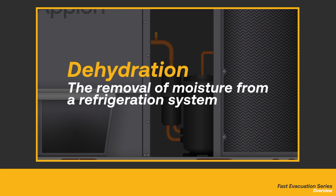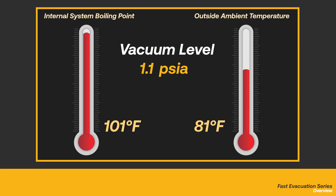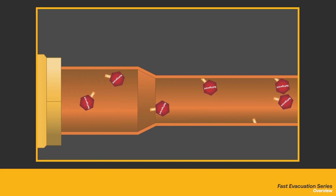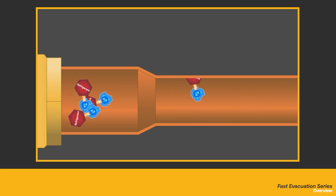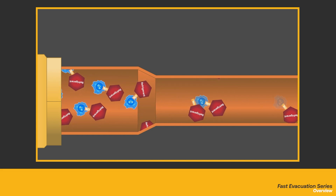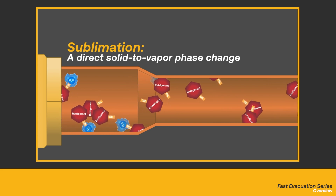Dehydration is the removal of moisture from a refrigeration system. This process is the fundamental reason why pulling a system into a vacuum is so necessary. As we pull a deeper and deeper vacuum, what we're actually doing is lowering the system's internal pressure, thus lowering the boiling point of water. The goal of a deep vacuum is to pull it deep enough that the boiling point inside the system is the same or lower than the ambient temperature outside of the system. The ambient temperature will then be hot enough to evaporate any liquid moisture, which will be evacuated through the pump. If there is a high level of moisture in the system, it will freeze before it can be removed as vapor. Fortunately, ice will sublimate, which means it can change state from a solid directly to a vapor. Increasing the vacuum in the system will further reduce the boiling point, aiding in this process.